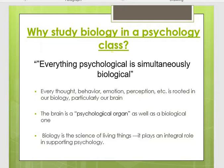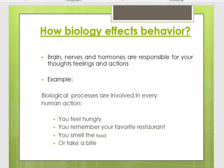The biological aspect of psychology is directly interrelated and is a very important part of our body. If the biological organs' functioning is not proper, then our visible behavior is not proper. Our brain, nerves, and hormones are responsible for our thoughts, processes, feelings, actions, and emotions.